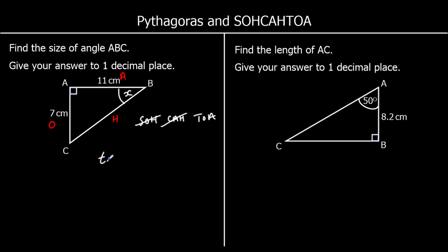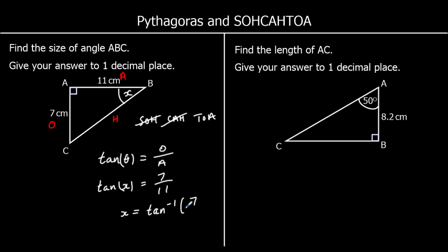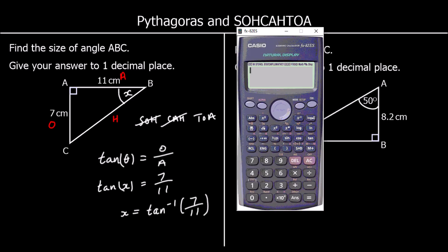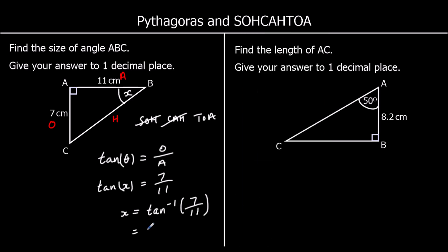TOA means tan(angle) = O ÷ A. Substituting what we know: tan x = 7 ÷ 11. To get x by itself we use arctan (shift tan), so x = arctan(7 ÷ 11). Typing shift tan, 7, 11 into the calculator gives an answer of 32.5. So x is 32.5 degrees to one decimal place.